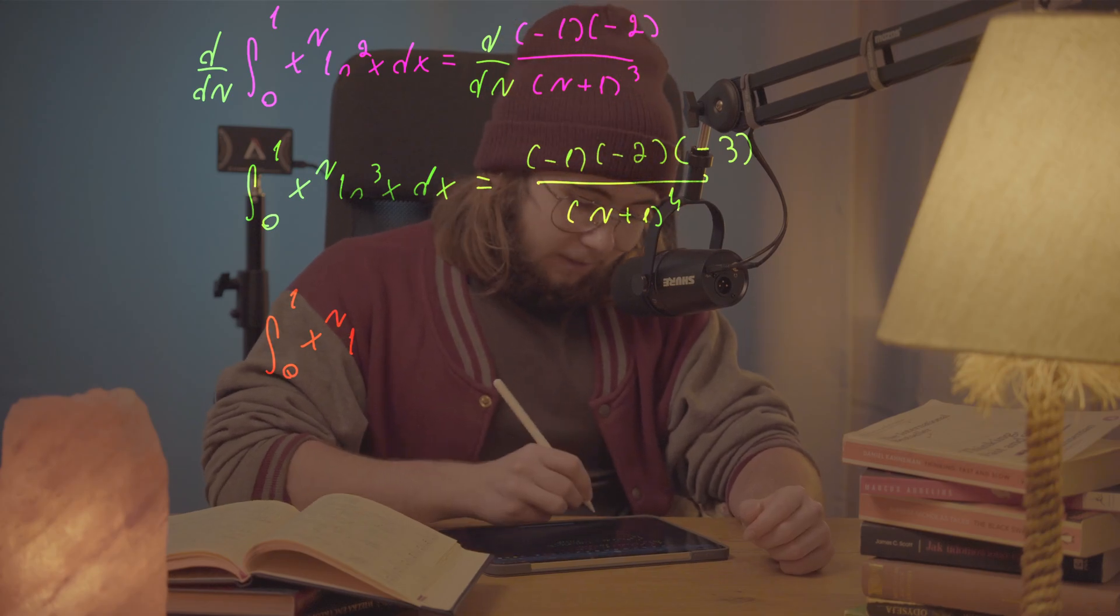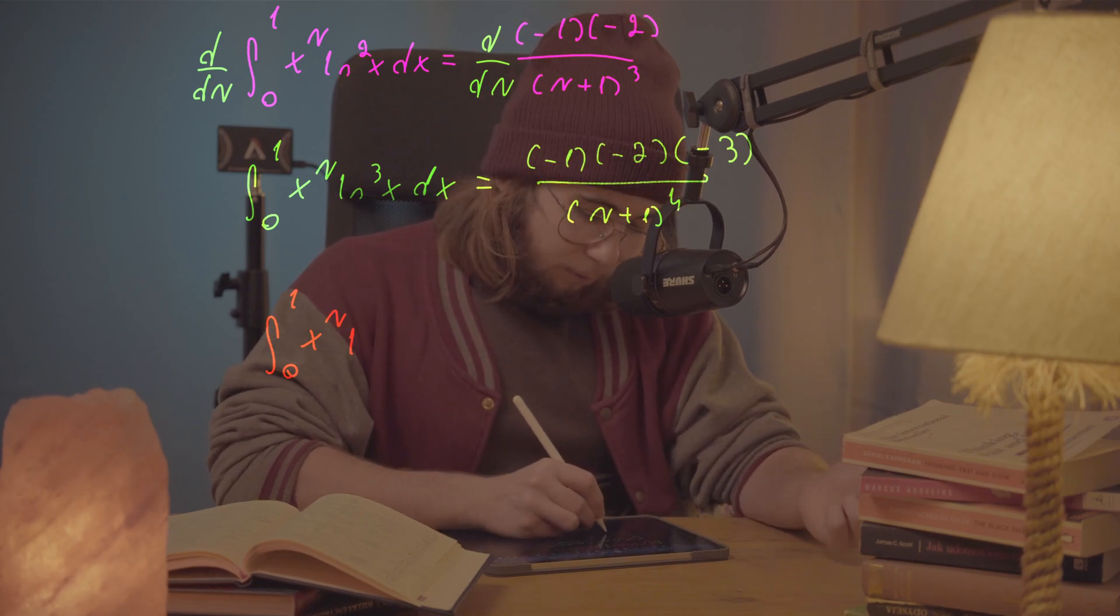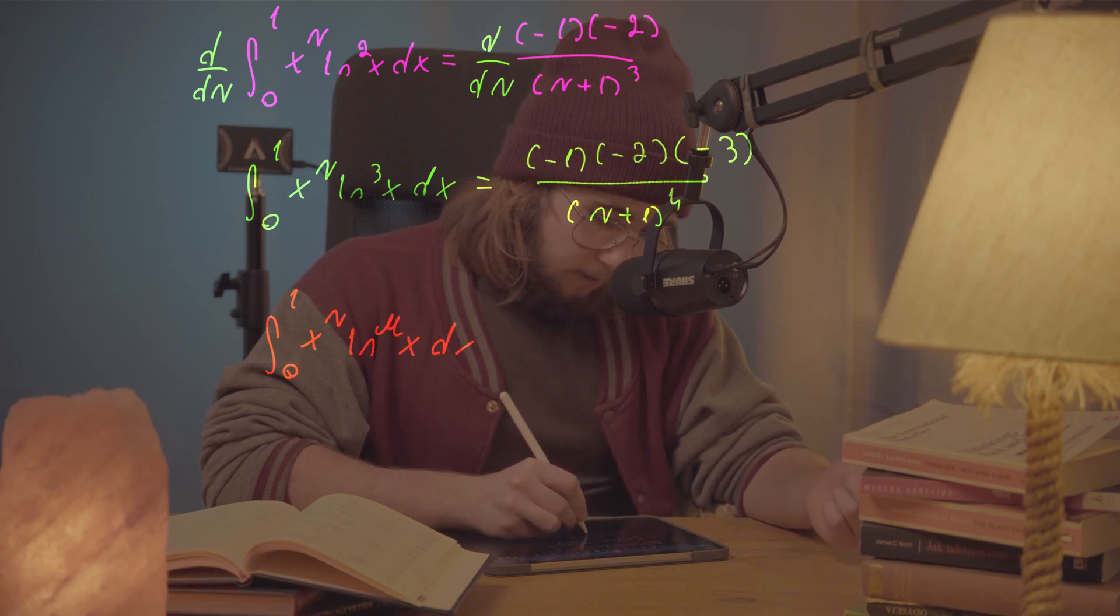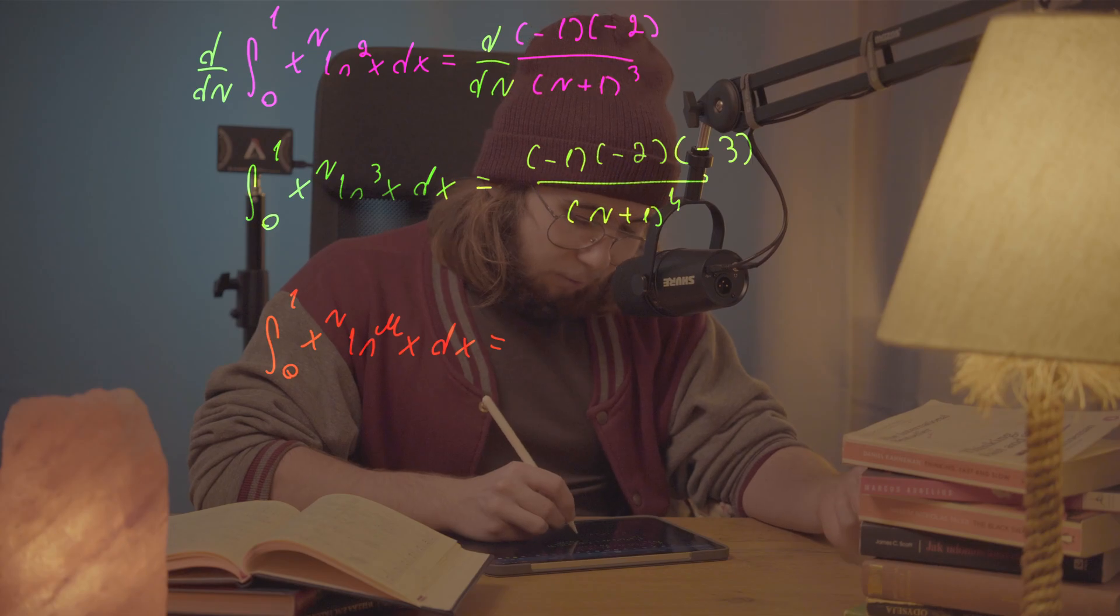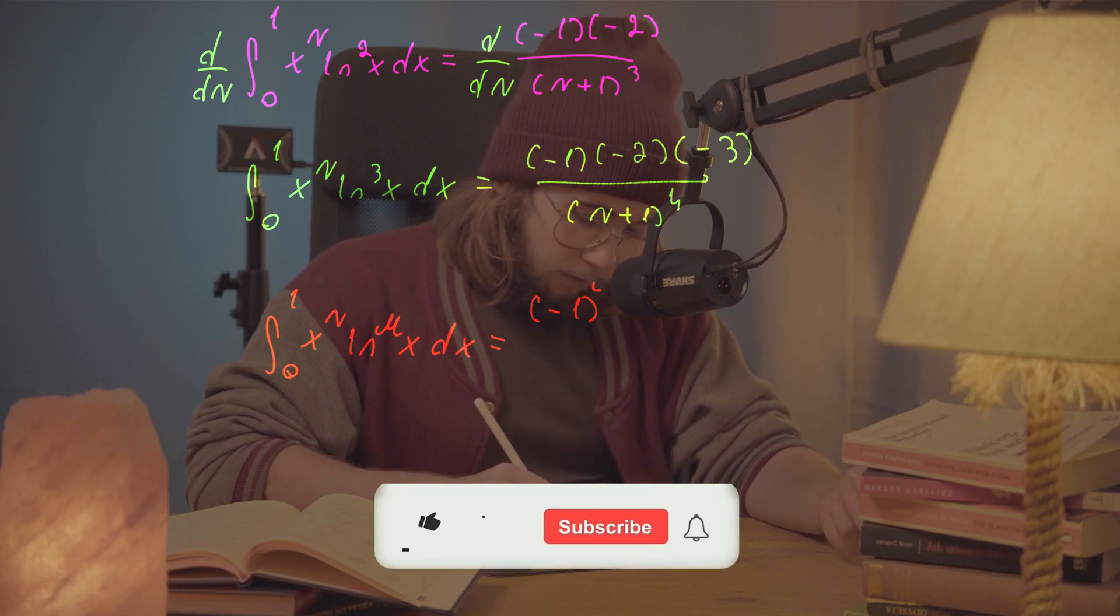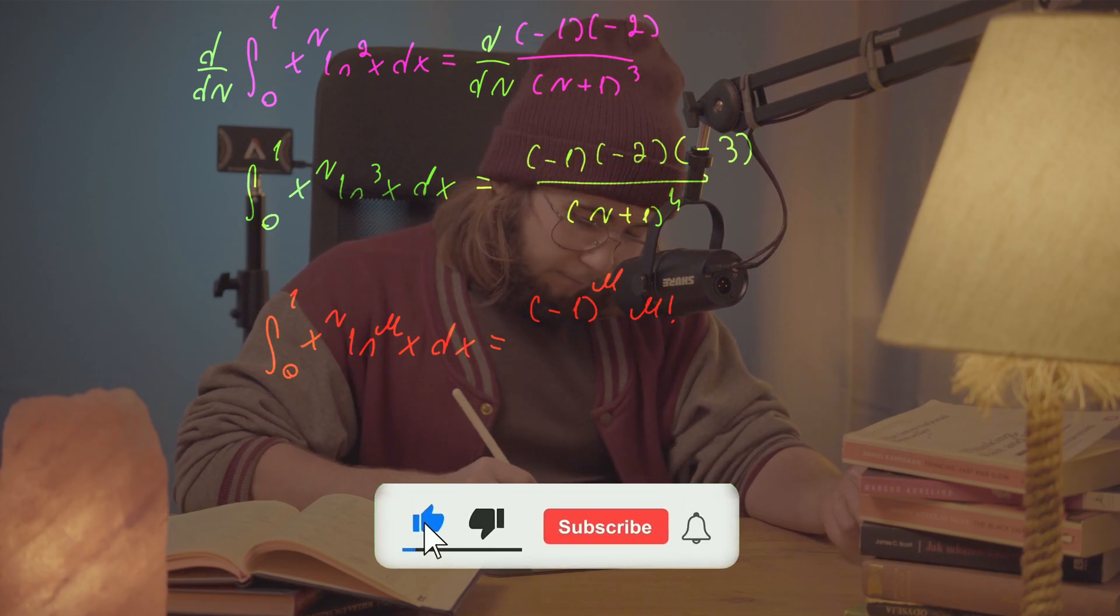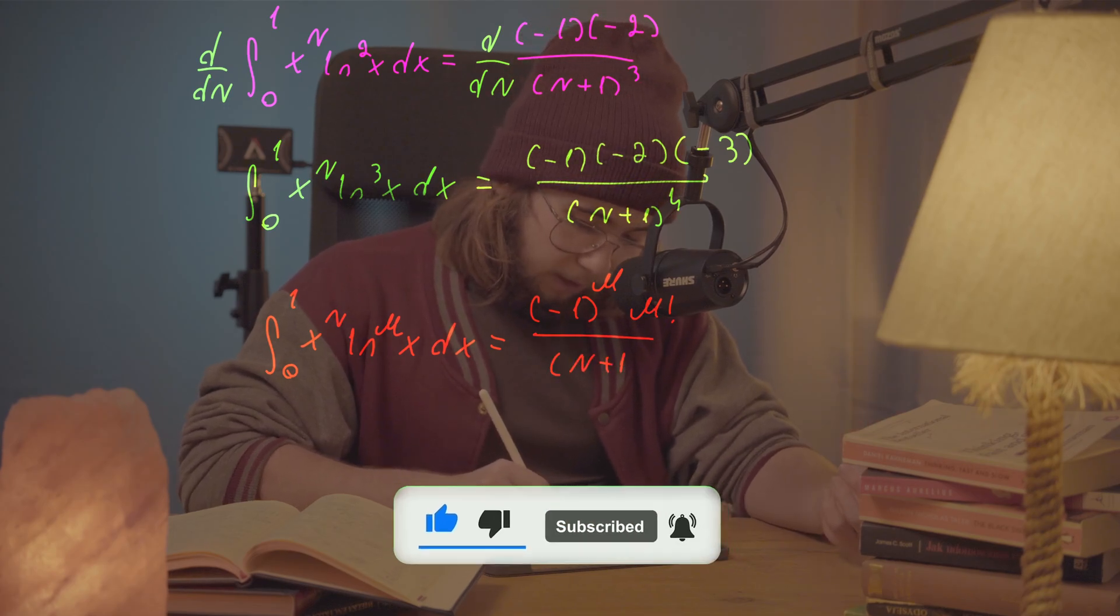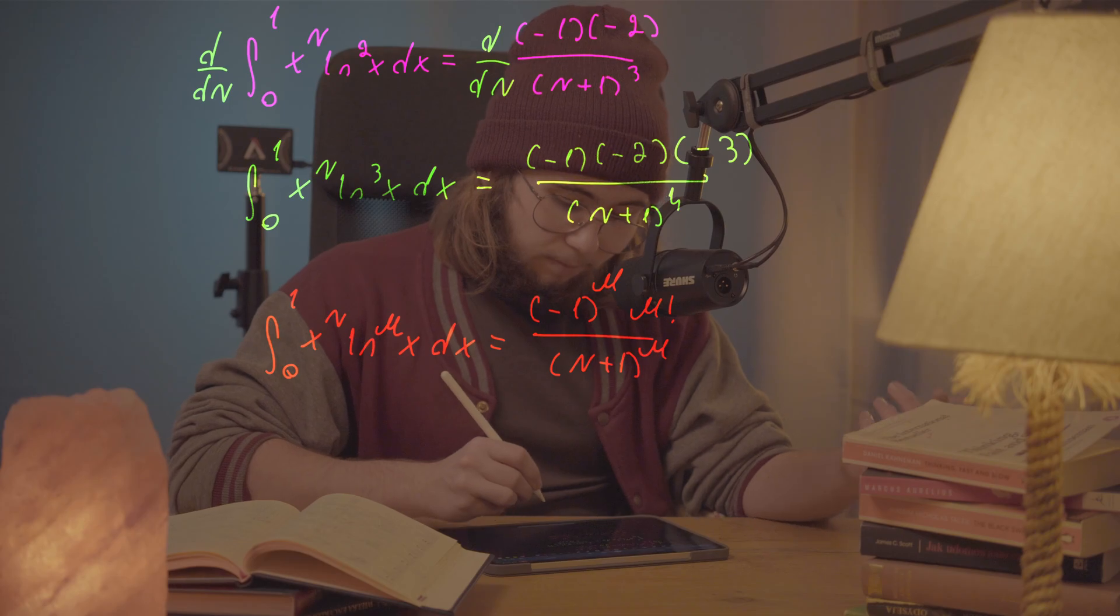On the left-hand side, the integral of x to the power of capital N times the natural log to the power of m of x dx, and on the right-hand side, I would get negative 1 to the power of m times m factorial divided by capital N plus 1 to the power of m+1.